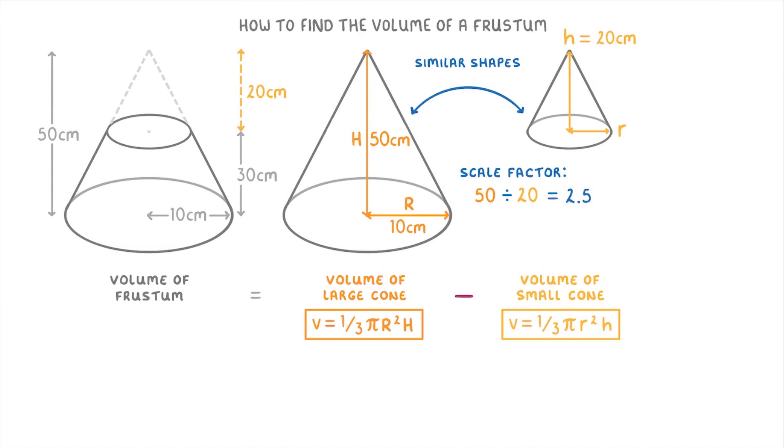So we now know that the small cone is 2.5 times smaller than the large cone, and so to work out the smaller cone's radius we just do the radius of the big cone, the 10 centimeters, divided by the scale factor of 2.5, which gives us 4 centimeters as the radius of the small cone.